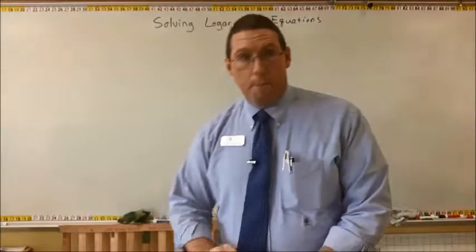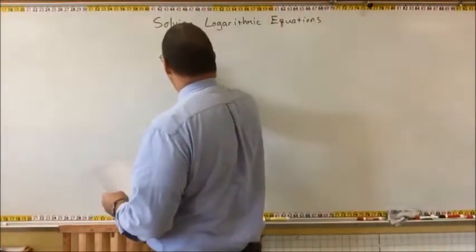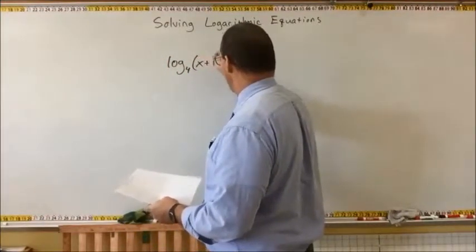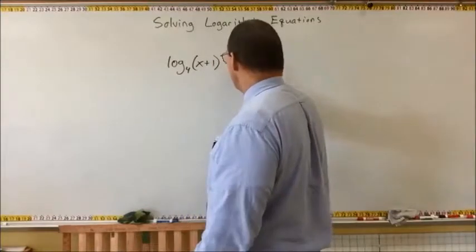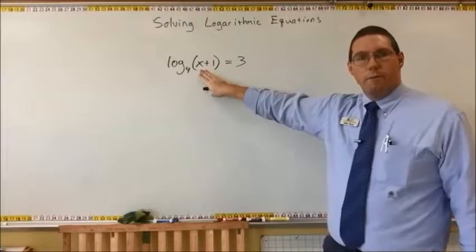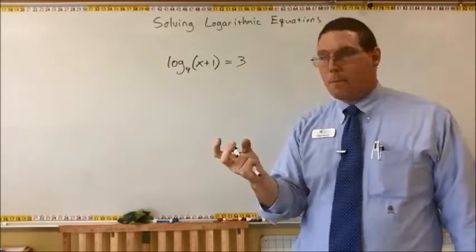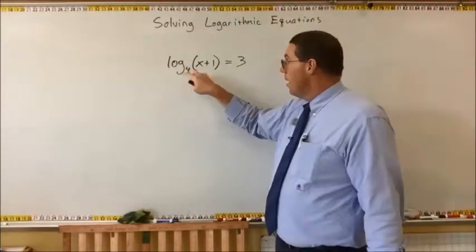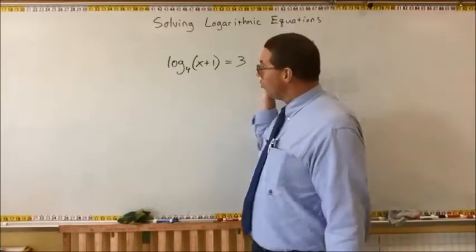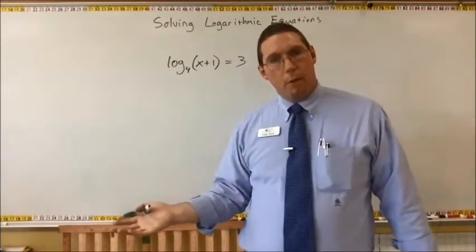So here's what I have for you — I'm going to throw a couple examples up here. Let's say that we have log base 4 of (x plus 1) is equal to 3. Now this x plus 1 inside the logarithm is tied up — it is held captive by this logarithm, and we can't get to x plus 1 without first getting rid of the logarithm.